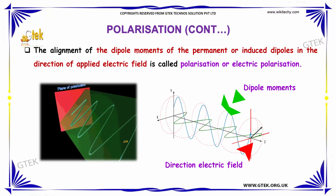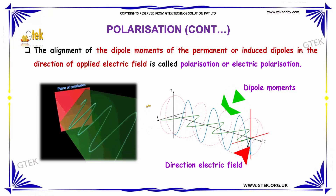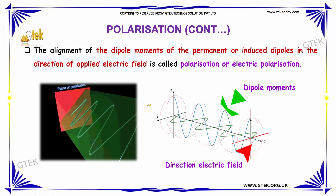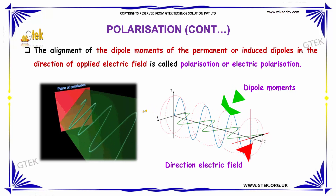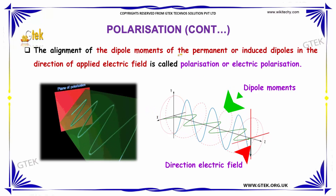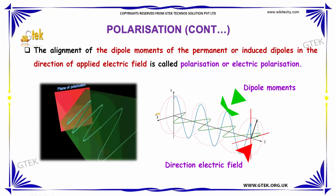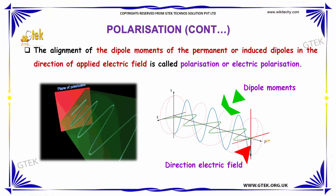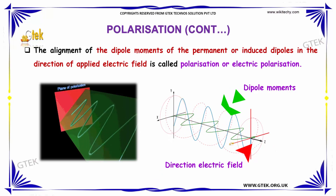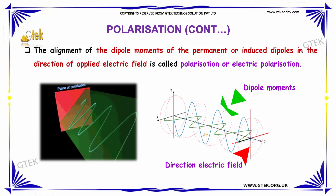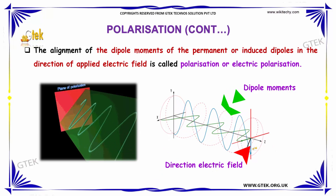The alignment of the dipole moments of permanent or induced dipoles in the direction of the applied electric field is called polarization, or electric polarization. The direction of the electric field and the corresponding dipole moments are shown here.